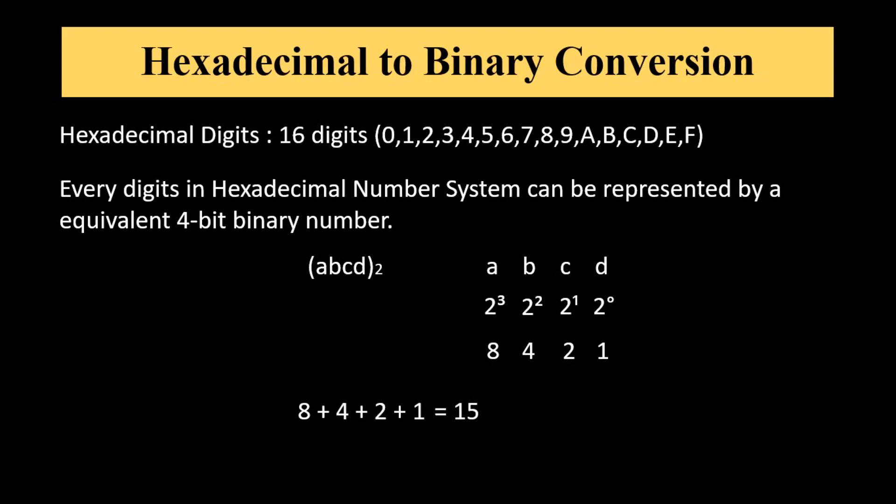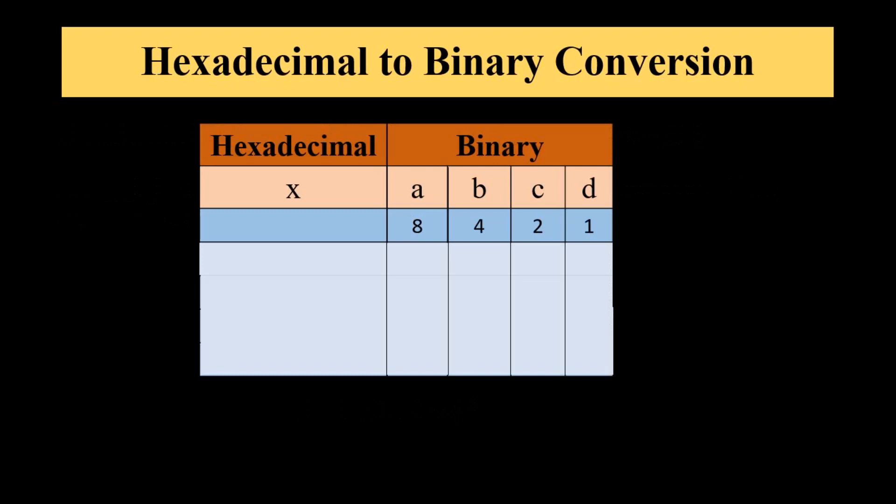Now we will draw a table in which every hexadecimal digit will be represented by an equivalent 4-bit binary number. First digit 0. It does not require any value, so it will be 0000.